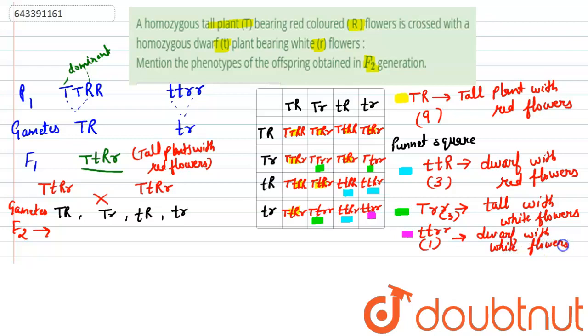So these are the phenotypes of the offspring observed in the F2 generation: 9 tall with red flowers, 3 dwarf with red flowers, 3 tall with white flowers, and 1 dwarf with white flowers. Thank you.